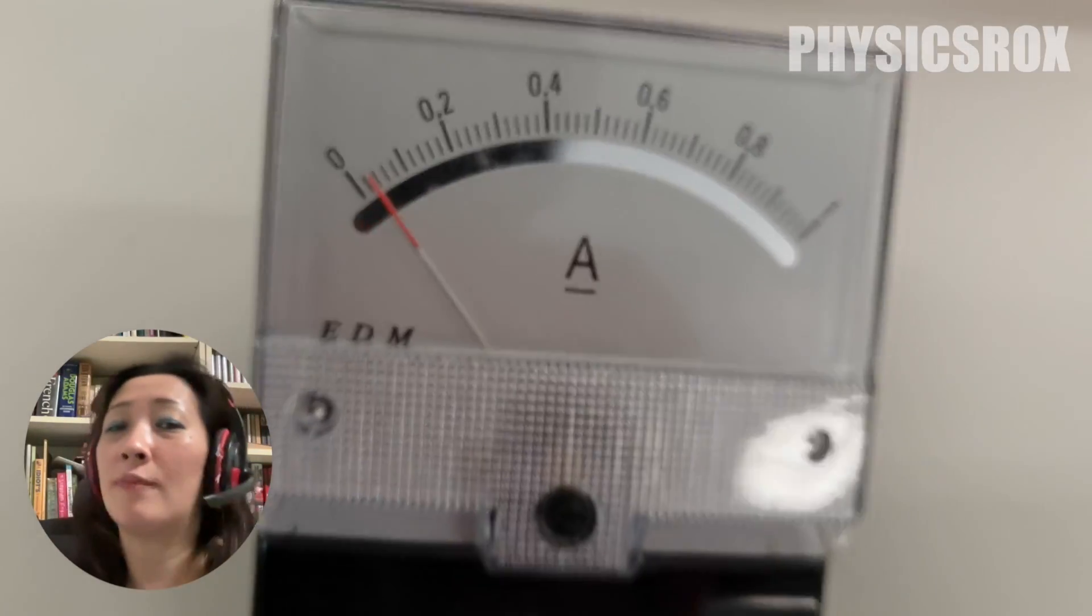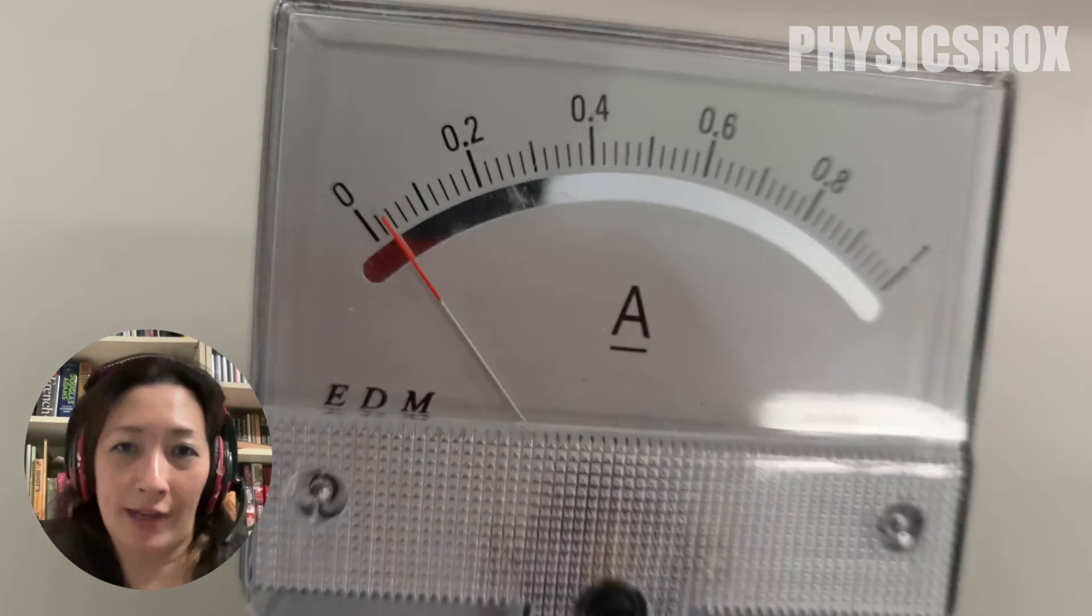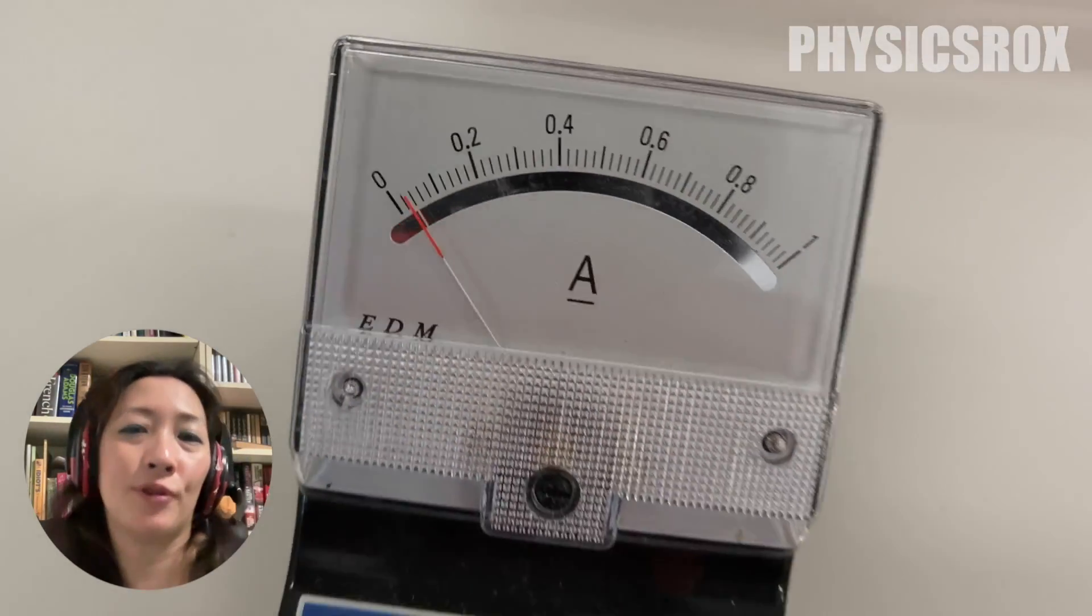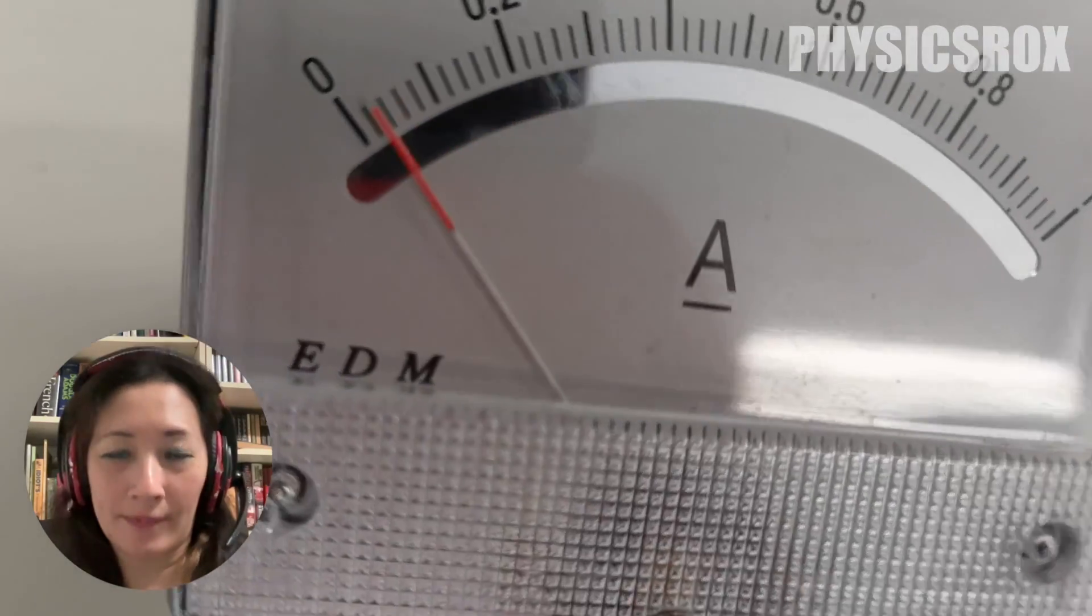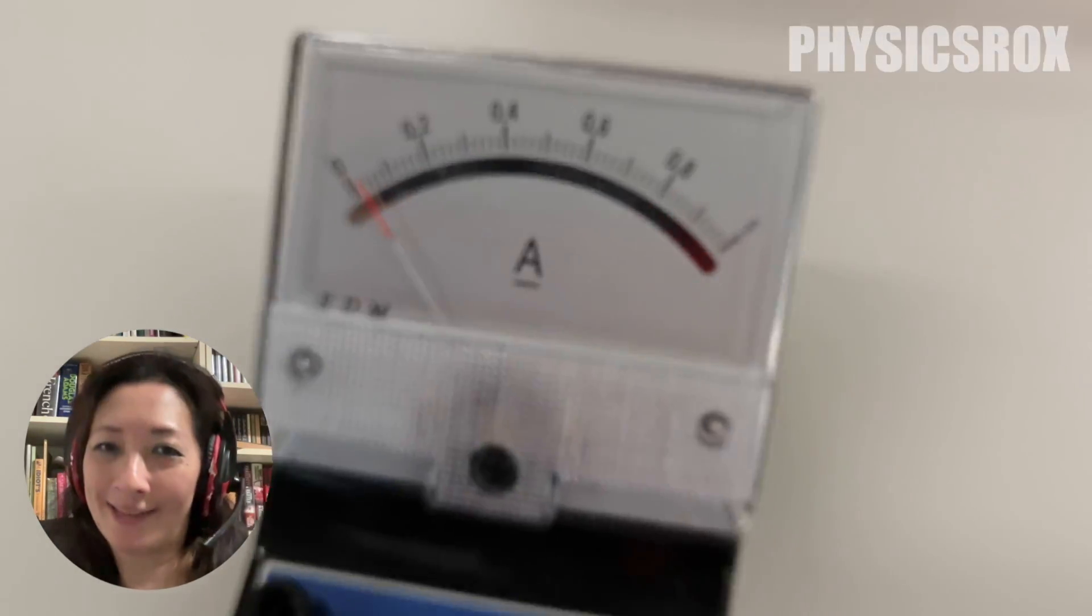Depending on the measuring instrument that you have, it's really easy to fix. And in this video, I'm going to show you how to fix the zero errors on an ammeter as well as a voltmeter. The way we fix it is exactly the same.